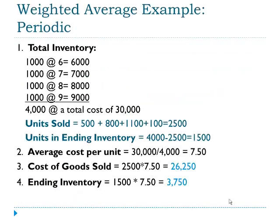Here's our numeric example using our basic example. We have 4,000 units with a total cost of $30,000. The average cost per unit is $7.50. Cost of goods sold would be the 2,500 items sold times $7.50, and ending inventory would be the 1,500 units still on hand times $7.50.